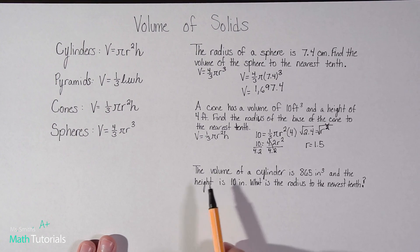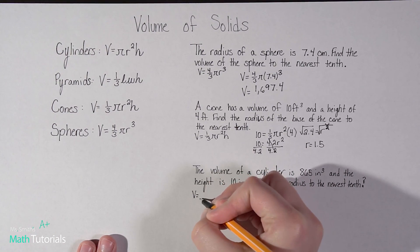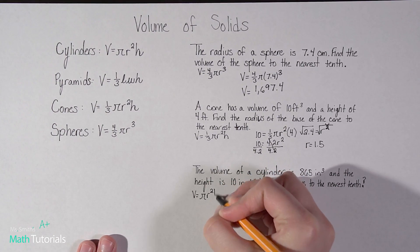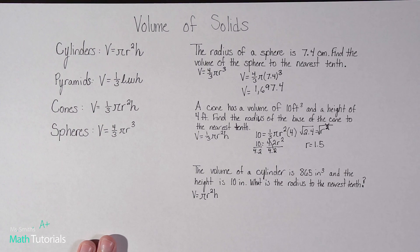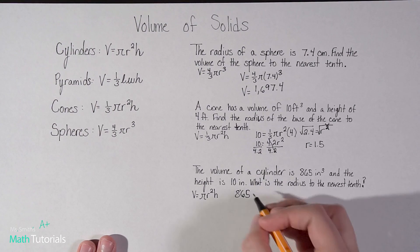Last problem. So this one says the volume of a cylinder. So this time we're talking about cylinders. We're going to be using this formula up here. Let me go ahead and just write it down. V equals pi R squared H. So very similar to that one. We just don't have that one third in front of it. So the volume of a cylinder is 865 inches cubed and the height is 10 inches. What is the radius to the nearest tenth? So again, we're going to be looking for that R value. We know the V. It told us volume is 865.